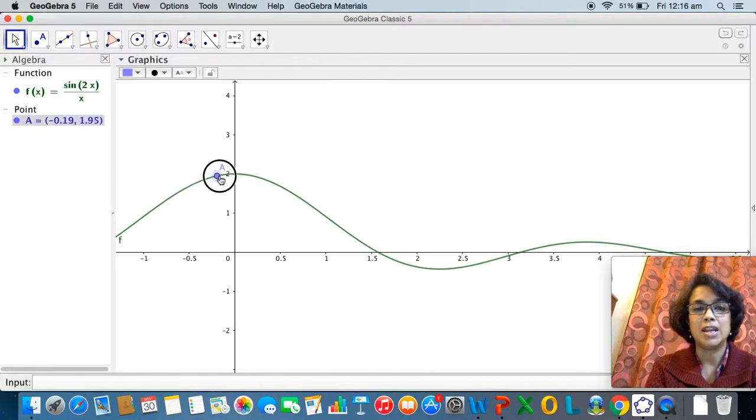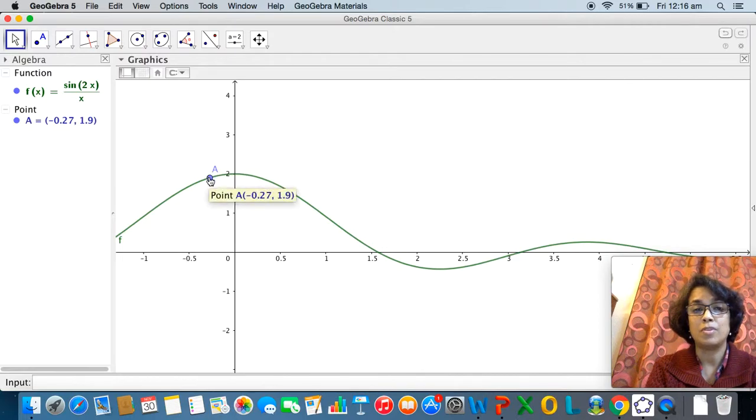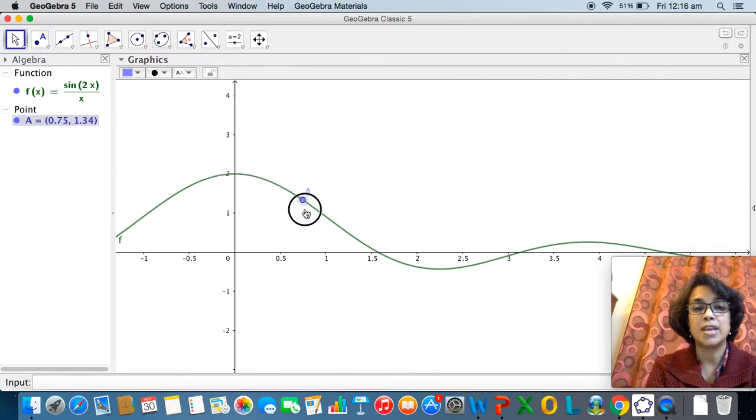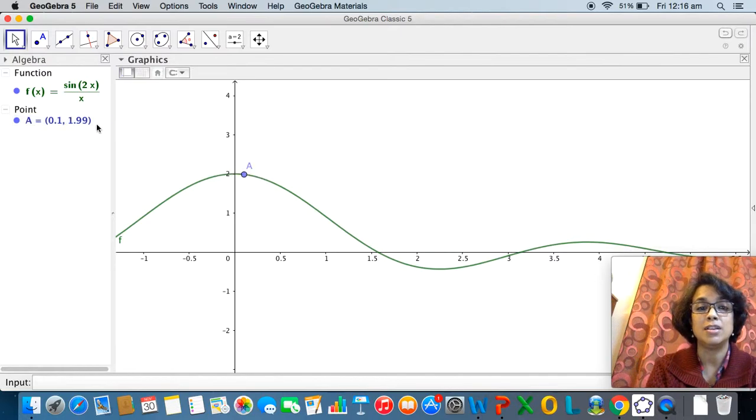Let me move this point A across the graph. As you may have noticed, as x approaches 0 from the left-hand side, we see that the y-coordinate approaches 2, and as we move across to the other side and approach x as x approaches 0 from the right-hand side, again we see that the y-coordinate is approaching 2. At 2 however, the function is not defined, so as you can see it is showing A is undefined when x is equal to 0.